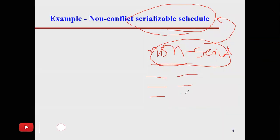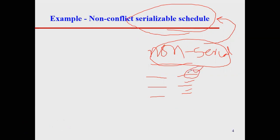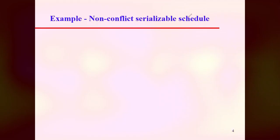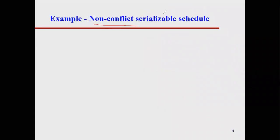So what we have to do is pick the non-serial one — for example especially the writing transactions or writing schedules — and then call it non-conflict. So there is this additional term called non-conflict. Let's see what we mean by serializable schedules which are non-conflict.